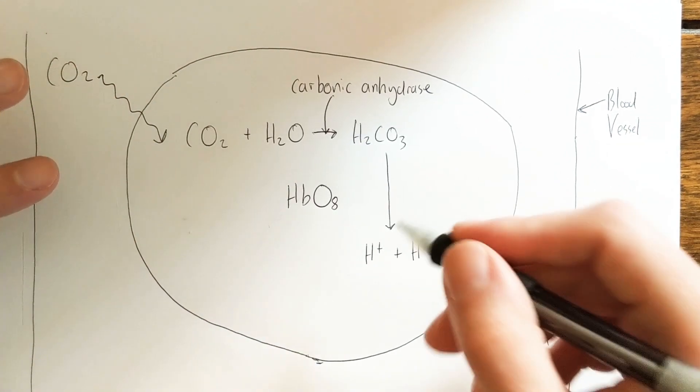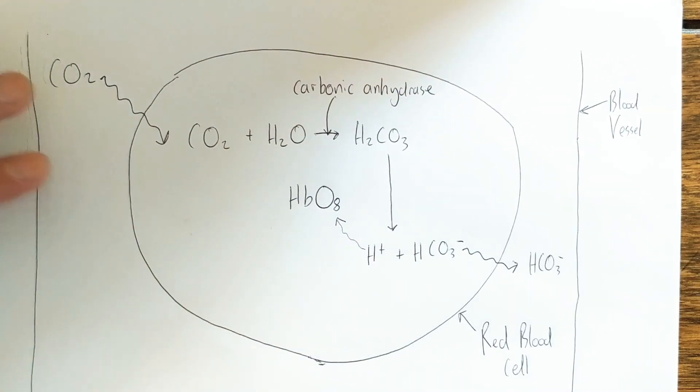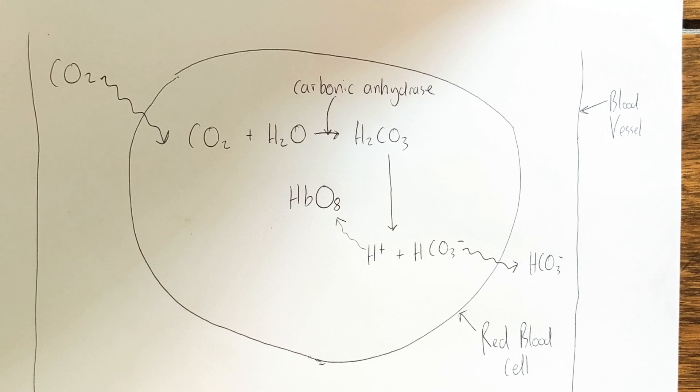Now the presence of hydrogen actually has an impact on the hemoglobin. It makes the hemoglobin more readily release the oxygen - it reduces the affinity hemoglobin has for oxygen.